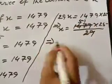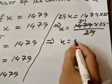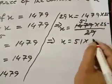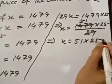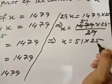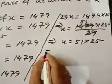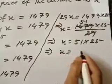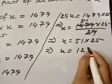Or X is equal to 51 into 25, 50 into 25, 1 to 50 plus 25, that means X is equal to 1275.